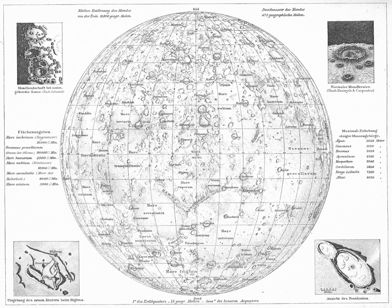When space probes have landed on Mars, individual small features such as rocks, dunes, and hollows have often been given informal names. Many of these are frivolous — features have been named after ice cream such as Cookies and Cream, cartoon characters such as SpongeBob SquarePants and Patrick, and 70s music acts such as ABBA and the Bee Gees.